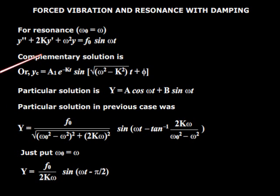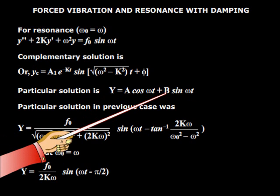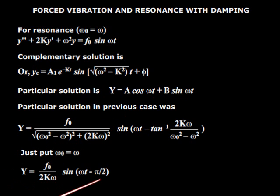In the case of resonance, the particular solution remains the same because there is no difficulty in finding the constants. The amplitude at resonance becomes infinitely high when the damping is very small — that is, when k is almost equal to zero.